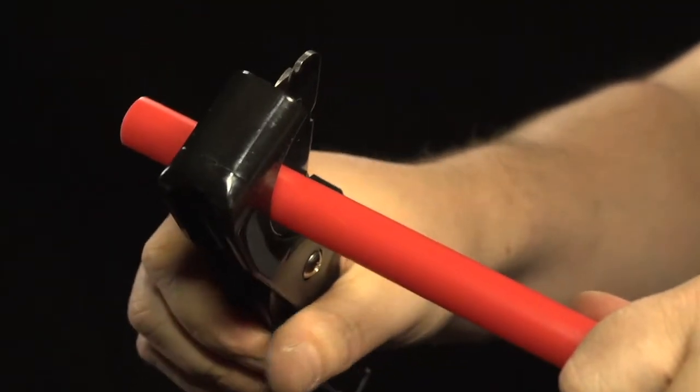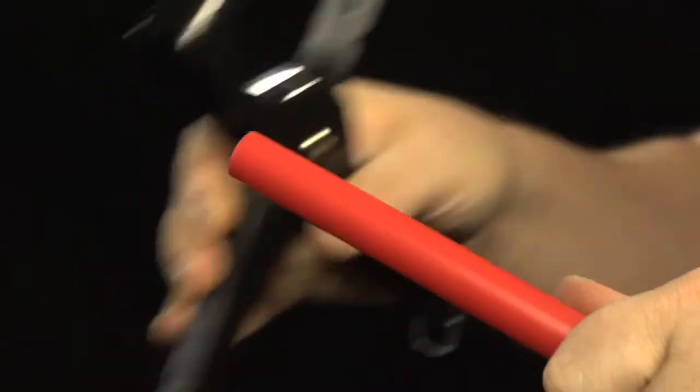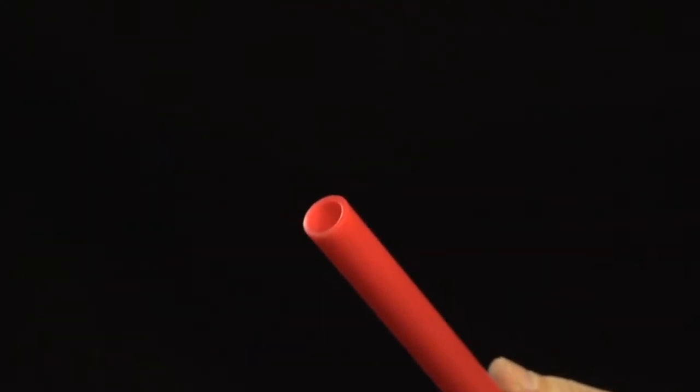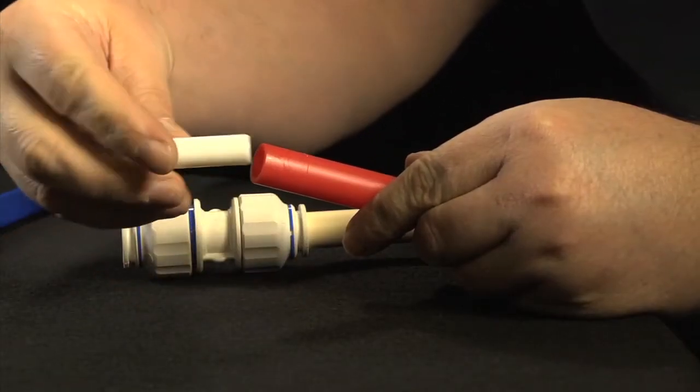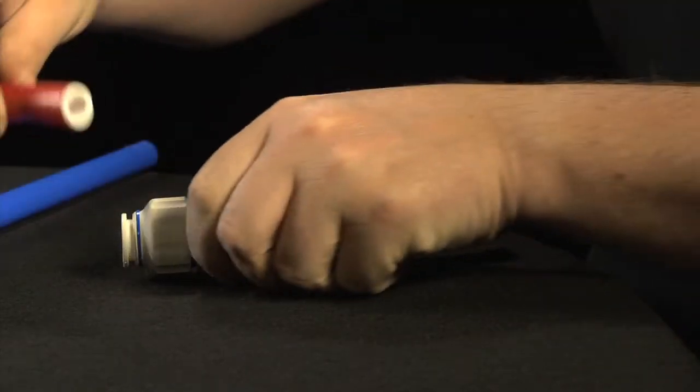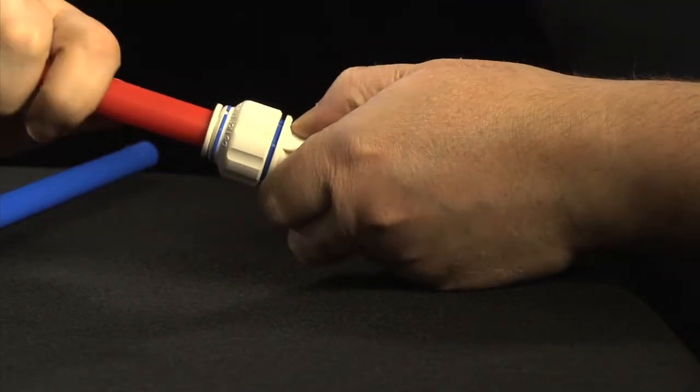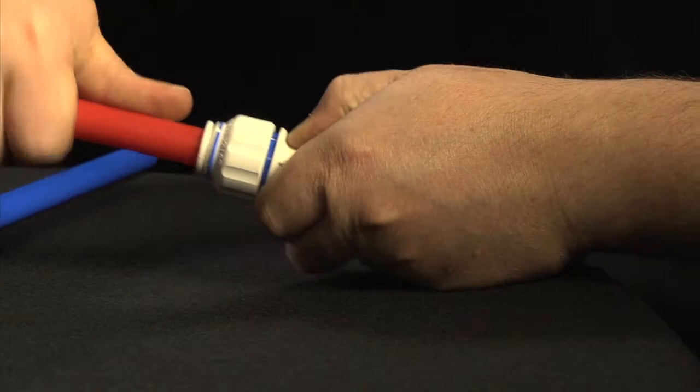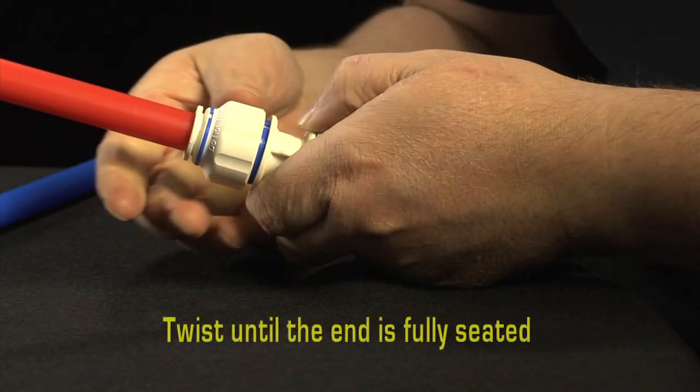To connect, squarely cut tubing or pipe to desired length, removing all burrs. Push fitting onto the end of the tube or pipe. Fitting will grip before it seals. Ensure that tubing or pipe is pushed into the fitting until the end is fully seated into the internal tube stop.